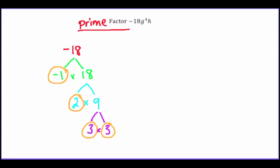Let's write those out. That is equal to negative 1 times 2 times 3 times 3. One of the differences when you're being asked to factor a monomial is that we're not going to use exponents — we're actually going to always write in expanded form, so I'm leaving these without exponents.